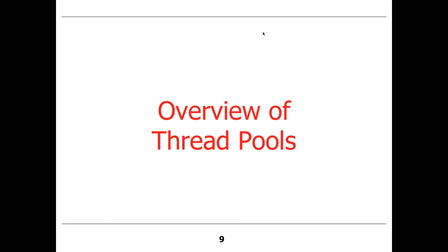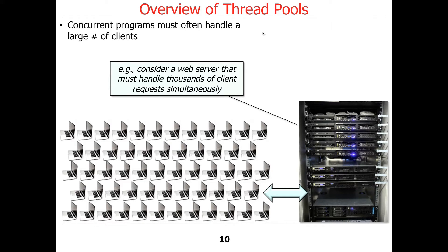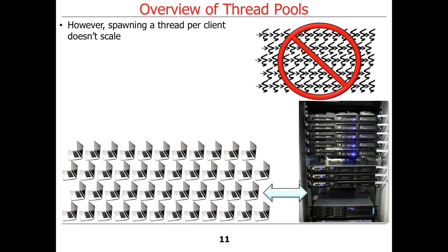Let's motivate why we need thread pools in the first place. Concurrent programs typically have to handle large numbers of clients. If you build a server — for example, a web server — you may have to handle thousands of client requests simultaneously. However, it's usually a bad idea, even if you have a lot of hardware, to spawn a thread per client.